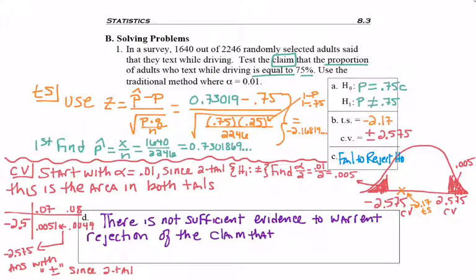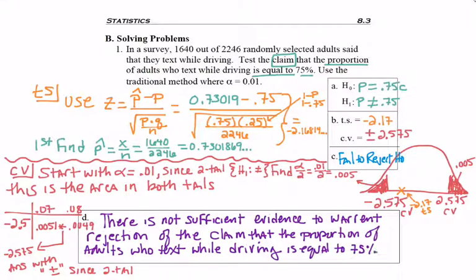And then I need to figure out how to word this. So I come back up here and it says, test the claim that the proportion of adults who text while driving is equal to 75%. That's actually a complete sentence that covers everything I want. So there is not sufficient evidence to warrant rejection of the claim that the proportion of adults who text while driving is equal to 75%. So remember, I'm looking for the word proportion so that you're telling me the type of study that is being evaluated. Some context. In this case, it's texting while driving, what the proportion is about. But specifically, is it more, less, or in this case, equal to, and what value, 75%?